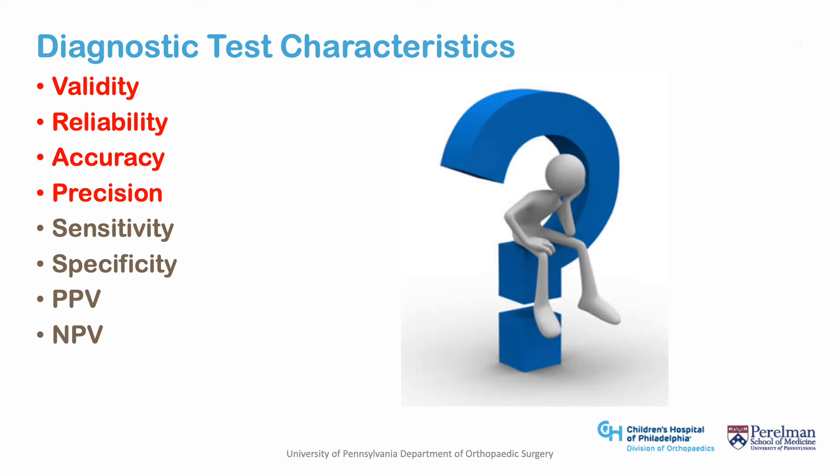Other qualities of a diagnostic test or algorithm involve its reproducibility or reliability, its validity — does a test measure what it's supposed to — along with its accuracy and precision. These are all important factors to consider when picking a diagnostic test for a patient or utilizing a diagnostic test to draw inferences in research.